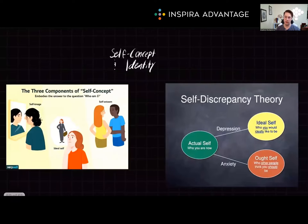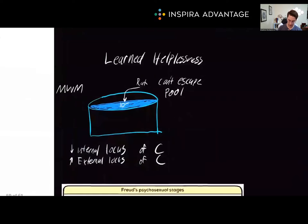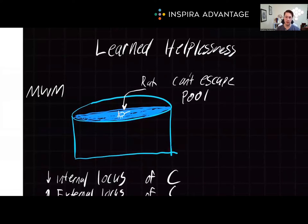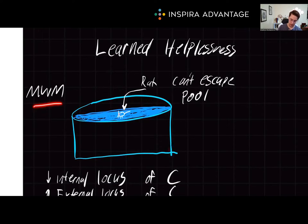We also have self-efficacy, which represents the degree to which we see ourselves as capable in a given skill or situation. This is related to the concept of learned helplessness, which is a state of hopelessness resulting from the inability to avoid repeated negative stimuli, usually due to a low internal locus of control and a high external locus of control. A classic example is the Morris water maze, where a rat swims in a tub until it gives up and floats, knowing it cannot escape — modeling depression.